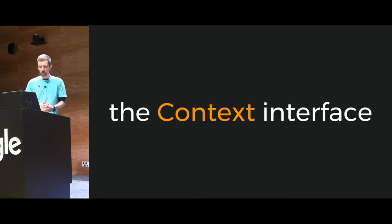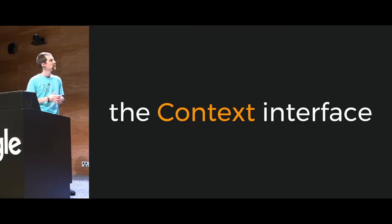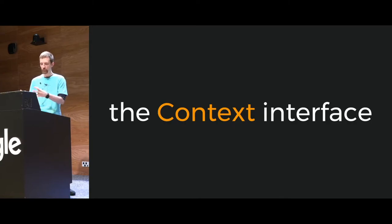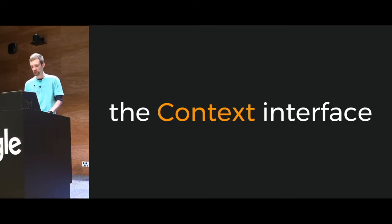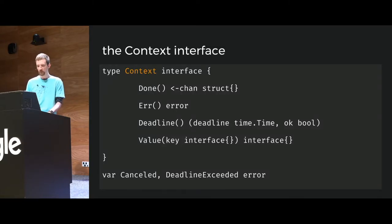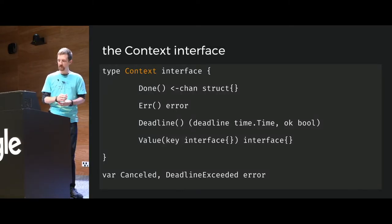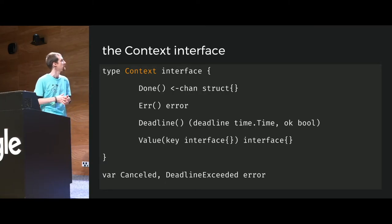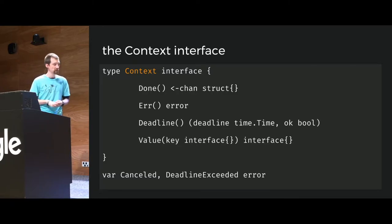The most important is the actual context interface. This is what you'll be using — objects that implement this interface are things you'll be passing around and using most of the time. The context interface has methods: Done, Deadline, Value, and Err. We'll see how to use these as we go along.